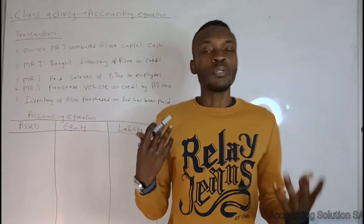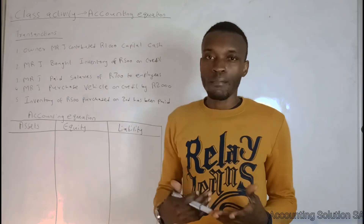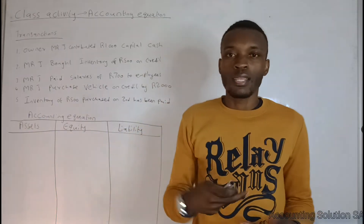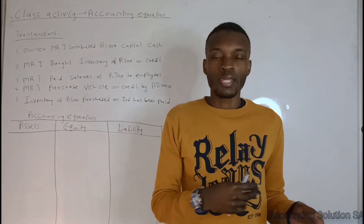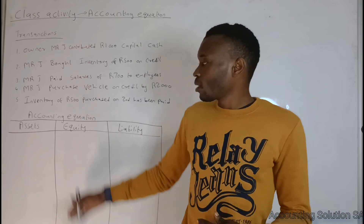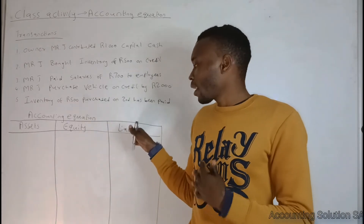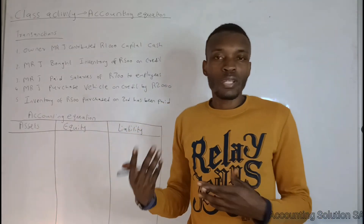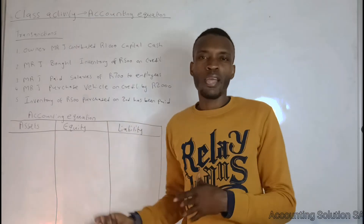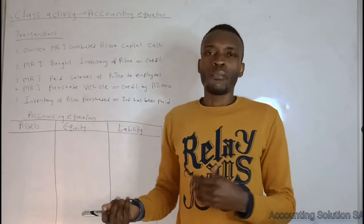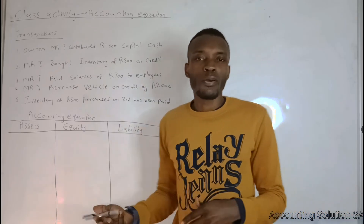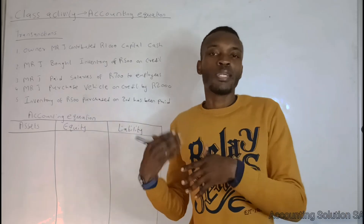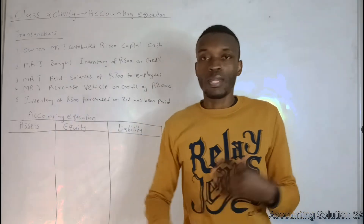When we talk about the accounting equation, the first step is to identify assets. An asset is an item that is owned by a business. Examples of assets include equipment, a vehicle, land and building, bank, and inventory. Please make sure you visit your textbook to check more examples related to assets.